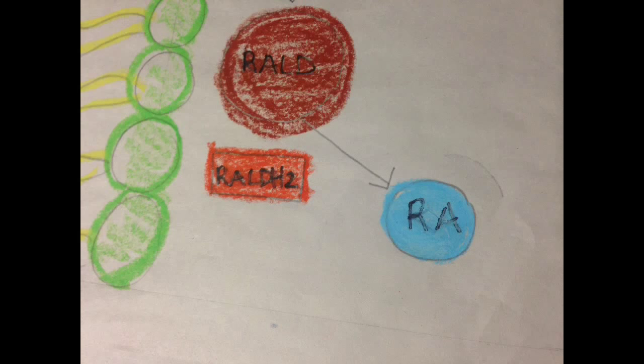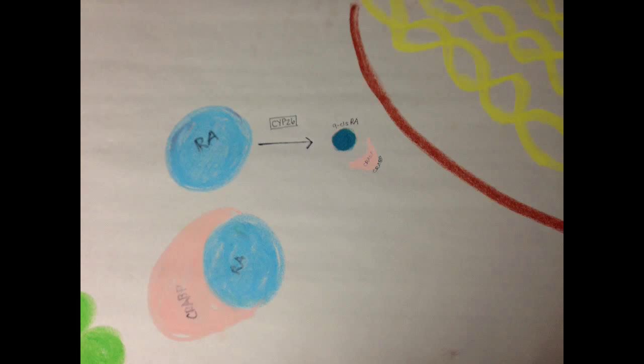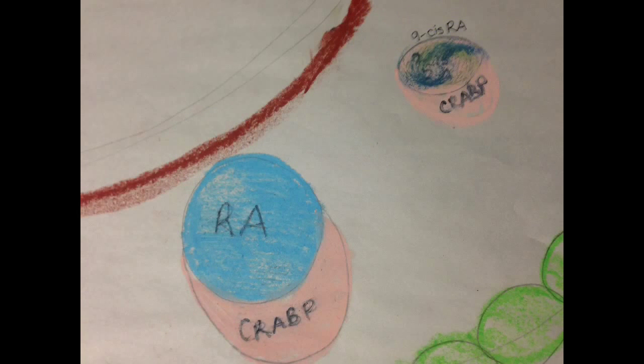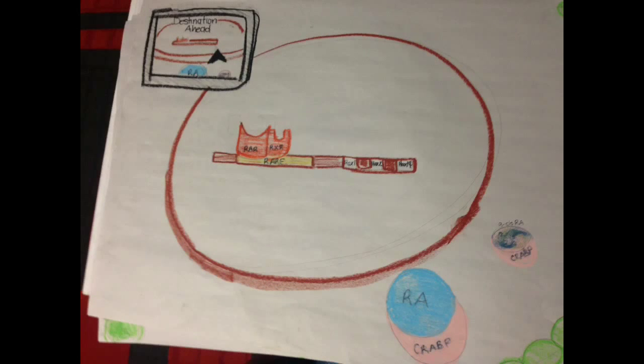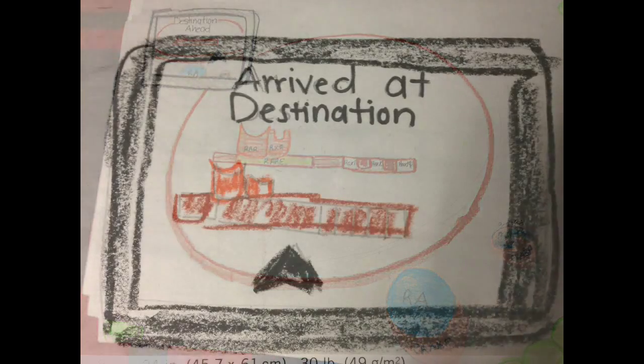There is a toll ahead of $0 as you pass into the surrounding cell. The RA picks up a binding protein in the cytoplasm known as CRABP and takes it into the nucleus. RA is further oxidized by the cytochrome enzymes, which converts it into cis-9 retinoic acid, which tags along for the ride. Arrived at destination.